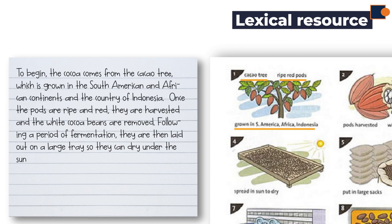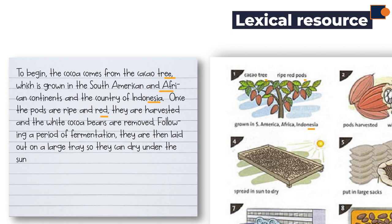In the sample, 'cacao tree' is written as 'the cocoa comes from the cacao tree.' 'Ripe red pods' is written as 'once the pods are ripe and red.' Finally, 'grown in South America, Africa, Indonesia' is written as 'which is grown in South American and African countries and the country of Indonesia.'